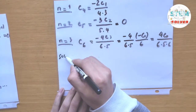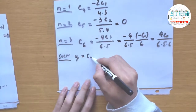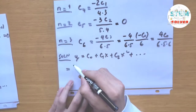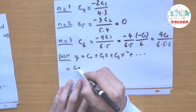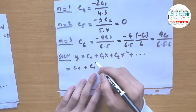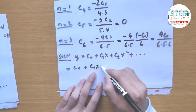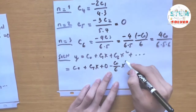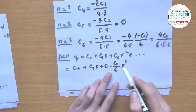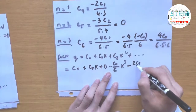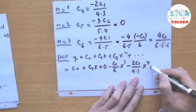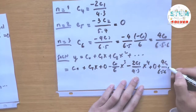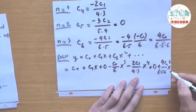Writing our solution: y equals c_0 plus c_1 x plus c_2 x squared plus c_3 x cubed plus c_4 x to the 4th plus c_5 x to the 5th plus c_6 x to the 6th plus dot dot dot. Substituting our values: c_2 equals 0, c_3 equals negative c_0 over 6, c_4 equals negative 2c_1 over 4 times 3, c_5 equals 0, and c_6 equals 4c_0 over 6 times 5 times 6.